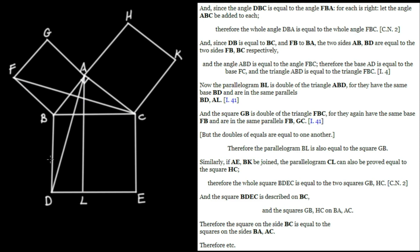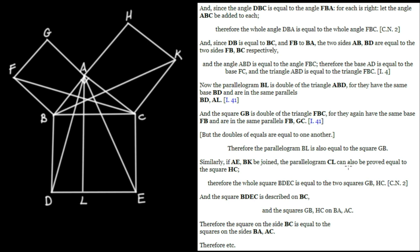Now we're going to repeat a very similar argument relating the square HC over here to the rectangle CL down here. Similarly, if AE and BK be joined, the parallelogram CL can also be proved equal to the square HC.